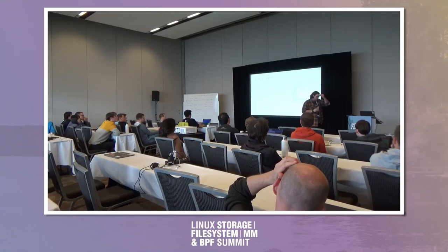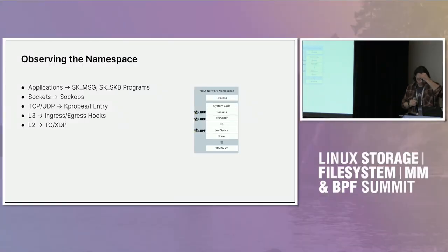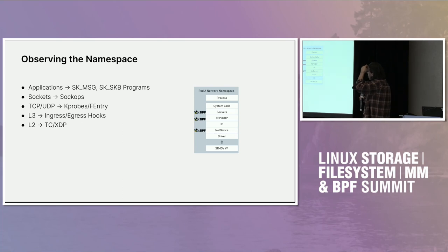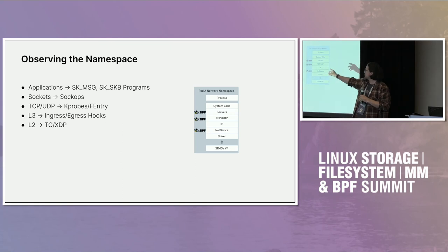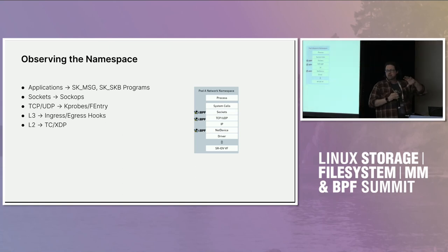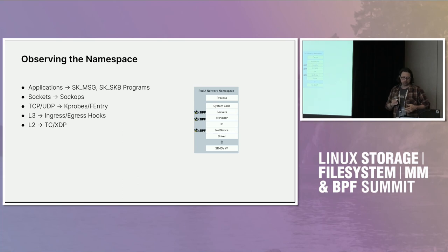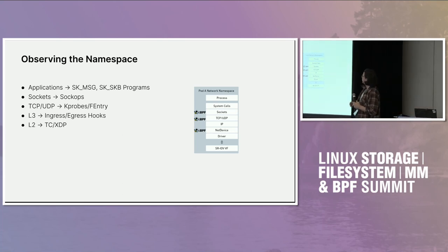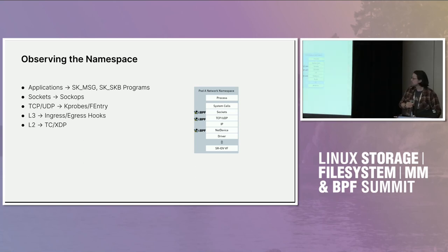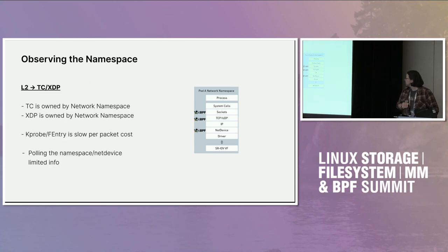But then we get to L2, and this is where the crux of our problem is. How do you hook an SR-IOV device? We have customers assigning SR-IOV devices into the pod outside the control plane of Kubernetes, putting it in the pod and saying: I want to know stuff about this thing. It's not in your host network namespace, it's not in the Cilium CNI host — but they want stats on it too.